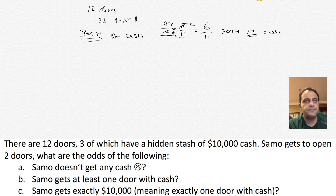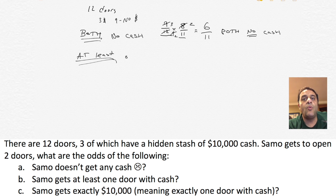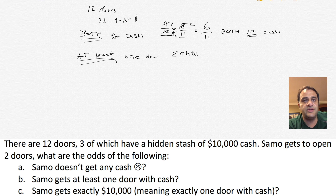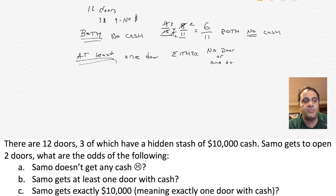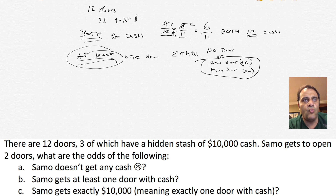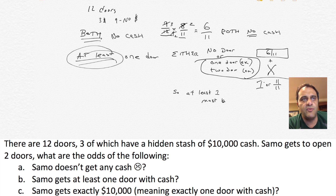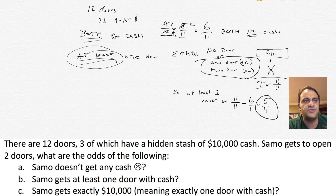There's a 6/11 chance that both doors have no cash. Now, there's a 100% chance that either both doors have no cash or at least one door has cash — those must equal 100%. So to find the odds of at least one door having cash, we take 11/11 minus 6/11, which equals 5/11. So 5/11 is the answer for what are the odds that at least one door has cash.